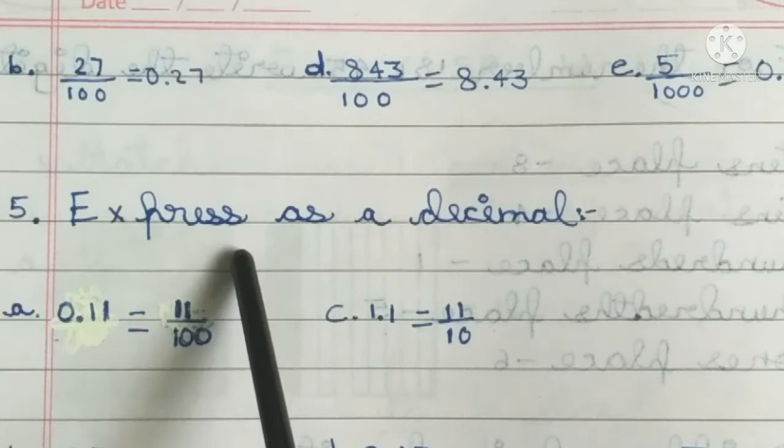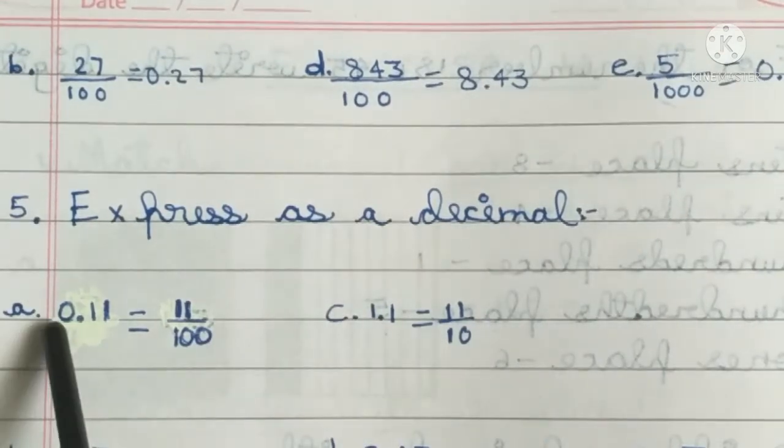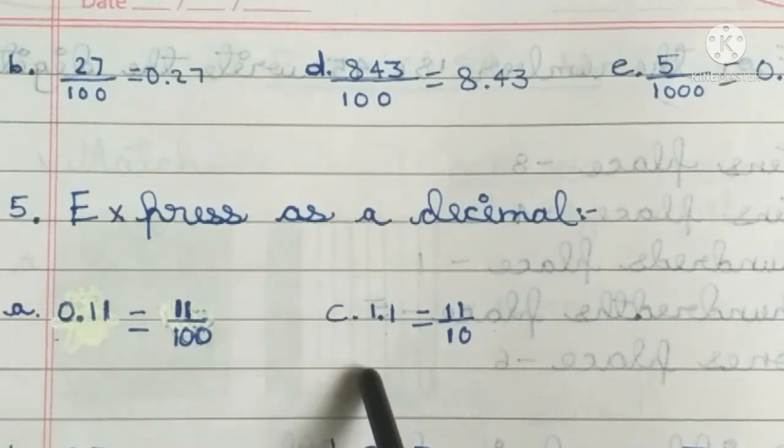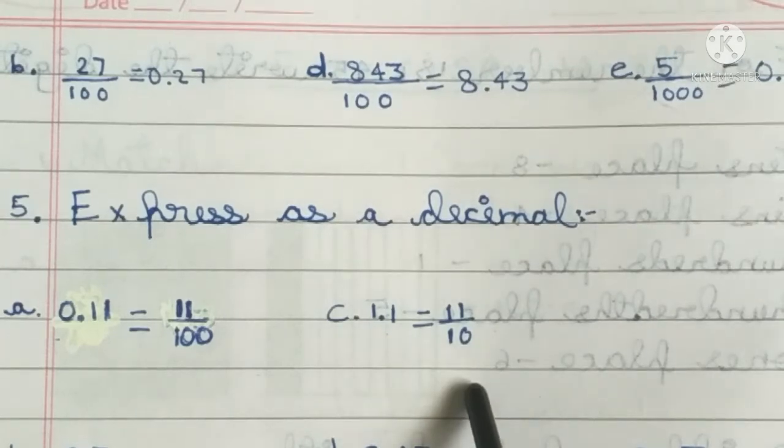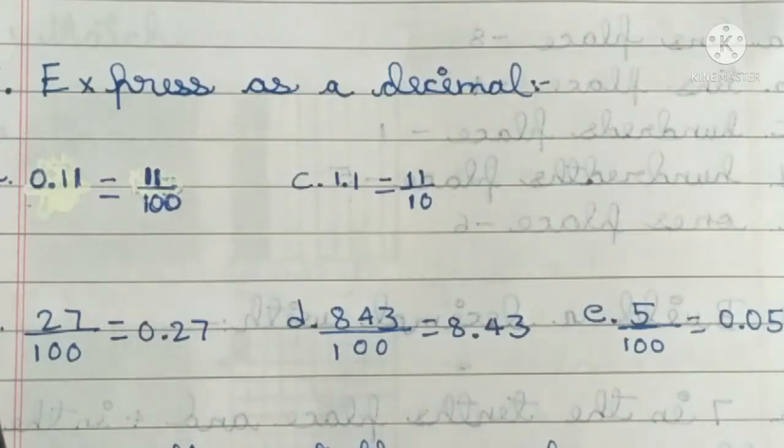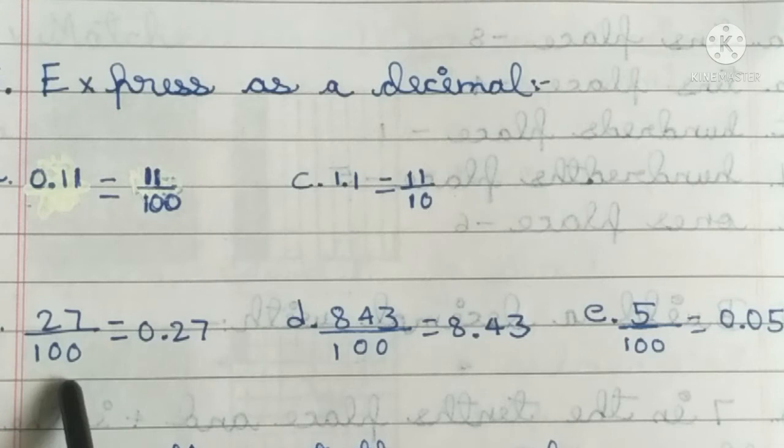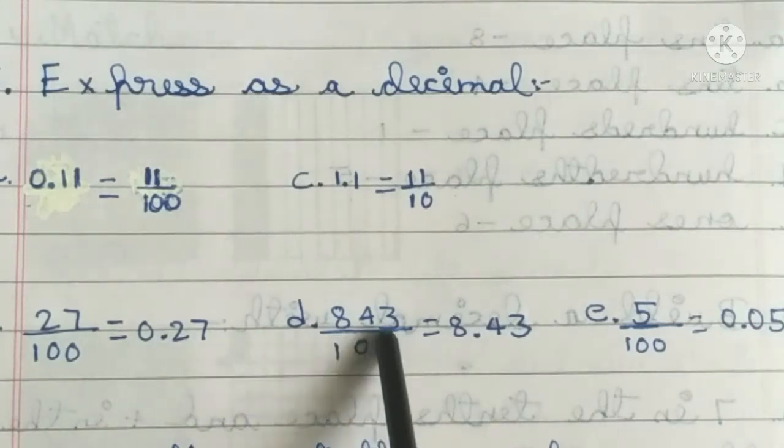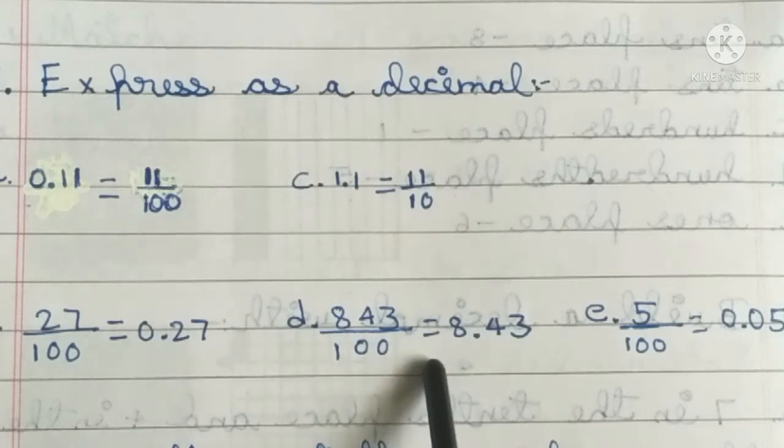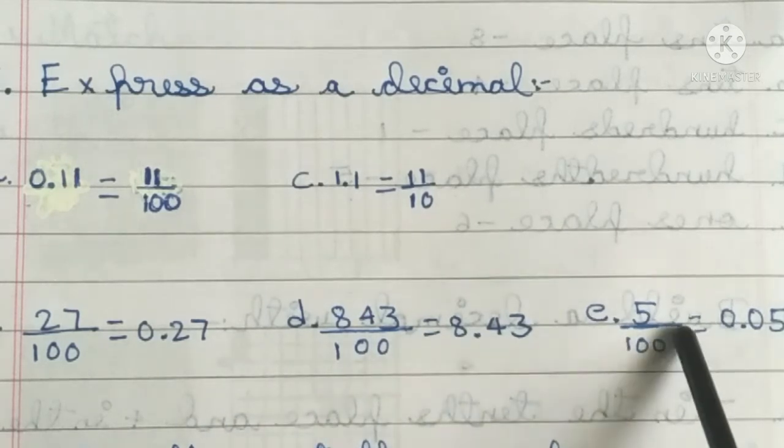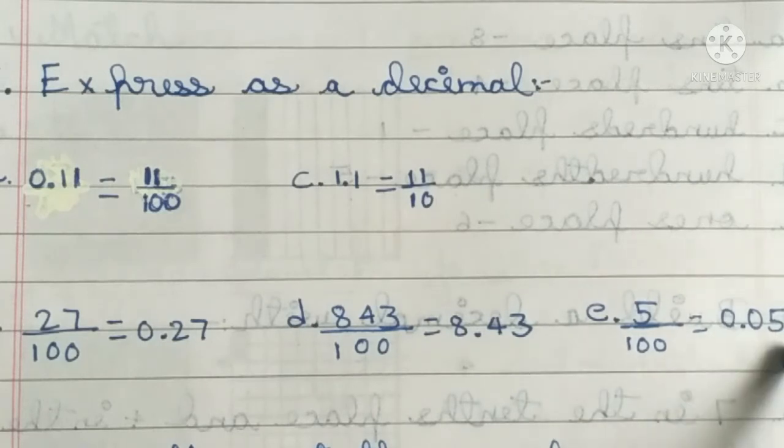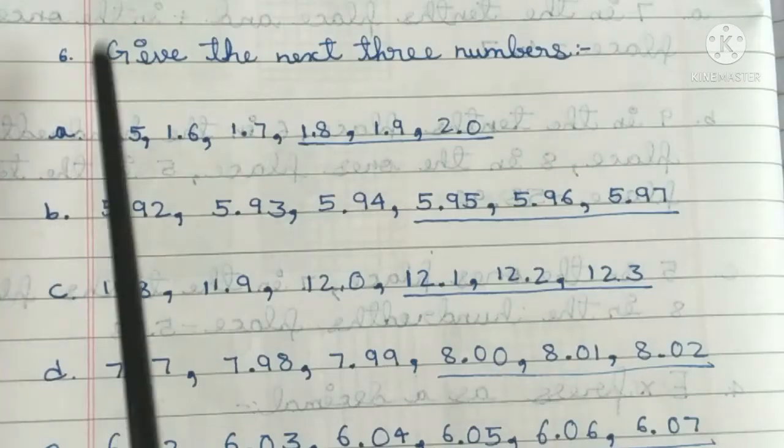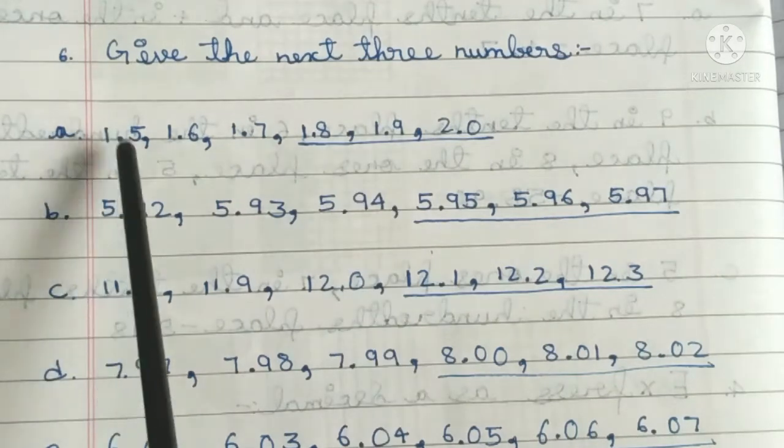Fifth main, express as a decimal: First one, 0.11, that is equal to 11 by 100. Third one, 1.1 is equal to 11 by 10. Second one, 27 divided by 100, that is equal to 0.27. Fourth one, 843 divided by 100, that is equal to 8.43. 5 divided by 100 is equal to 0.05. Sixth main, give the next three numbers: First one, 1.5, 1.6, 1.7...